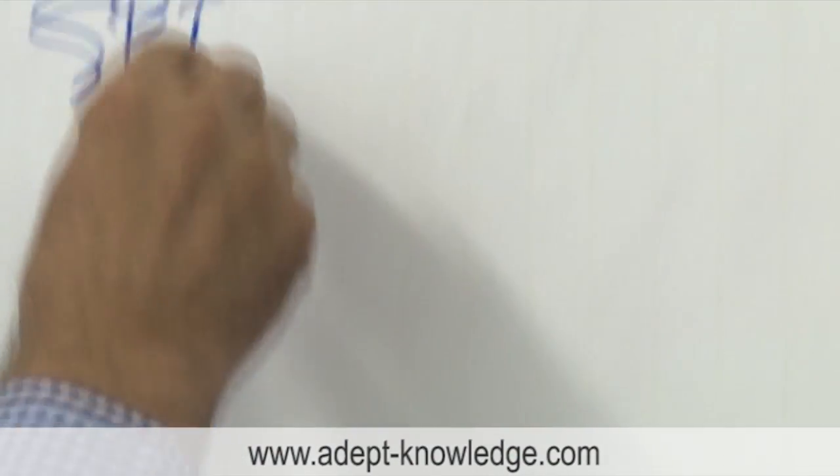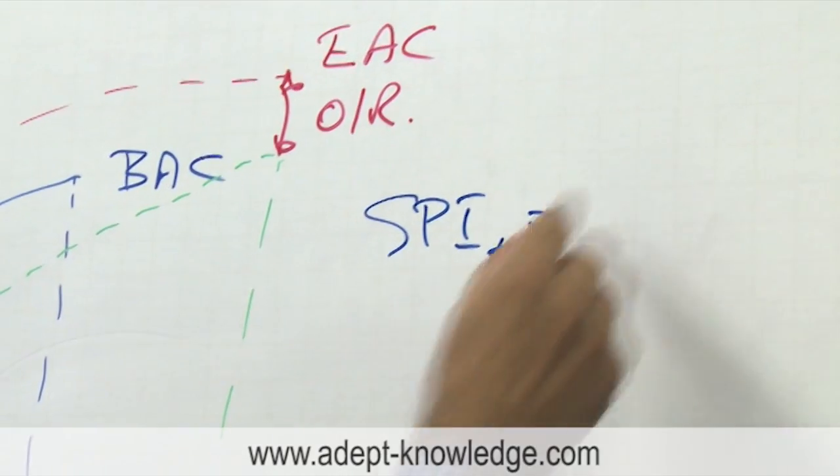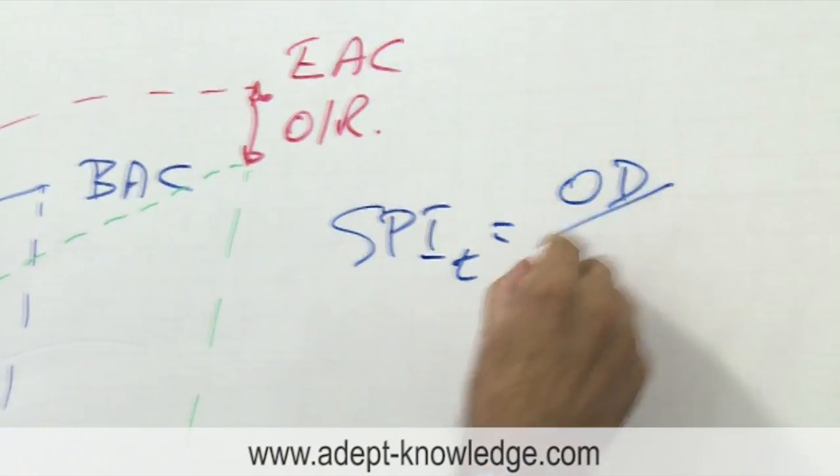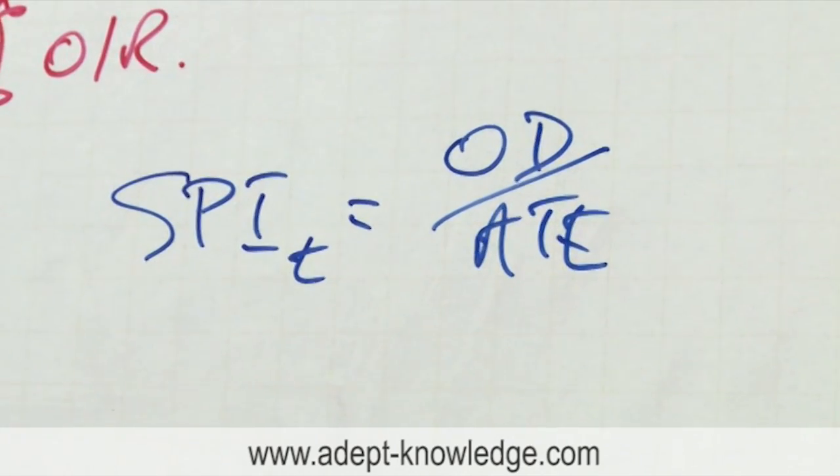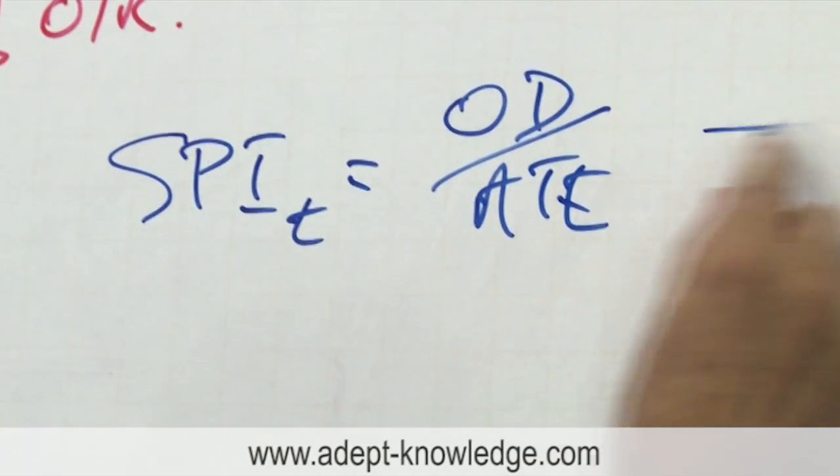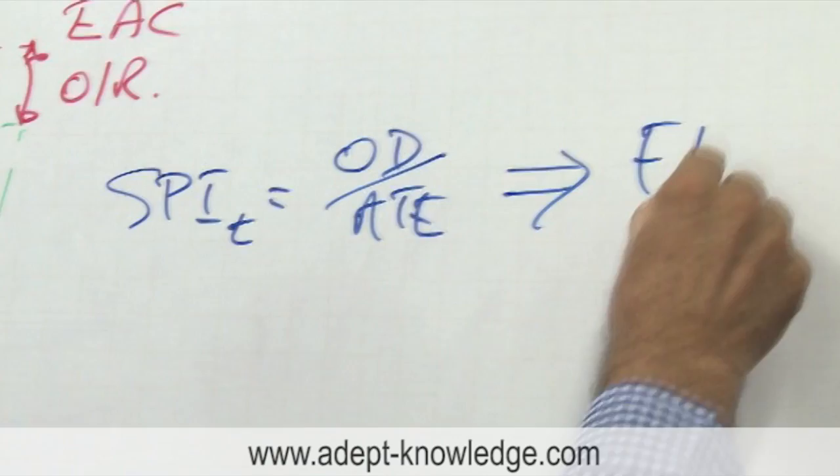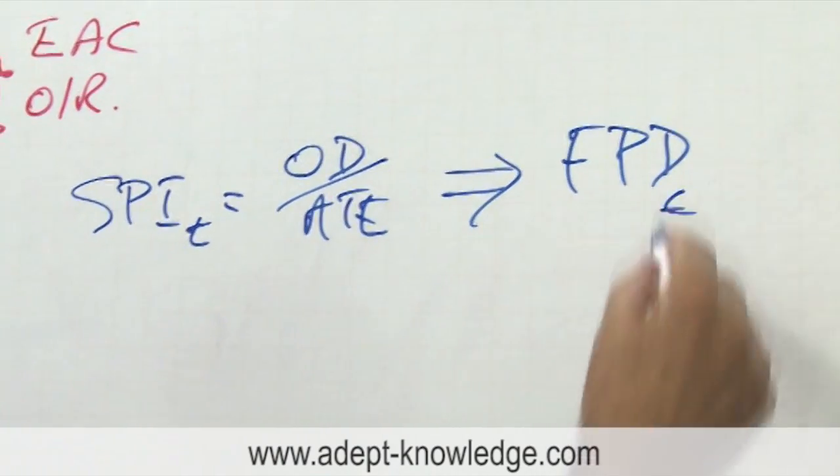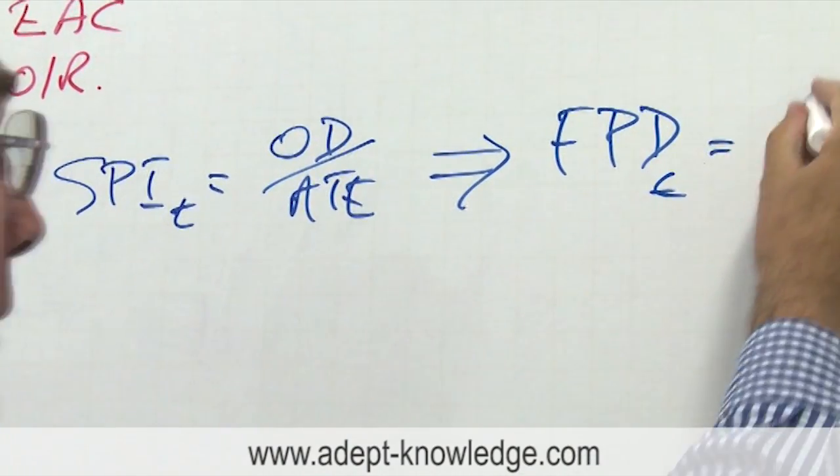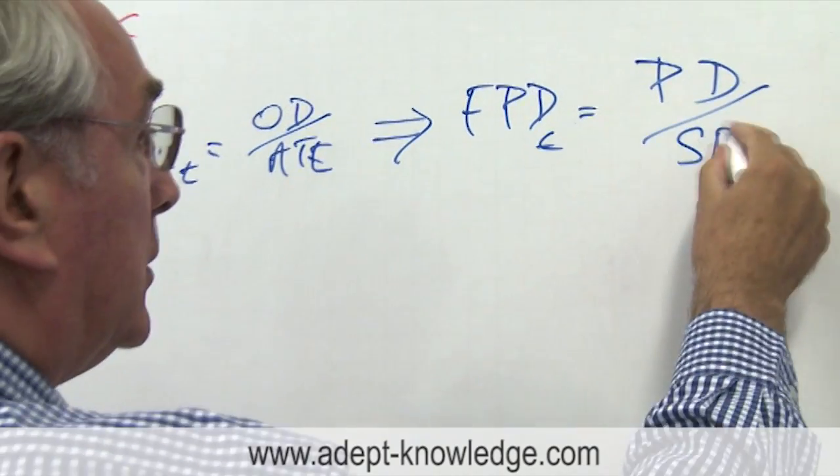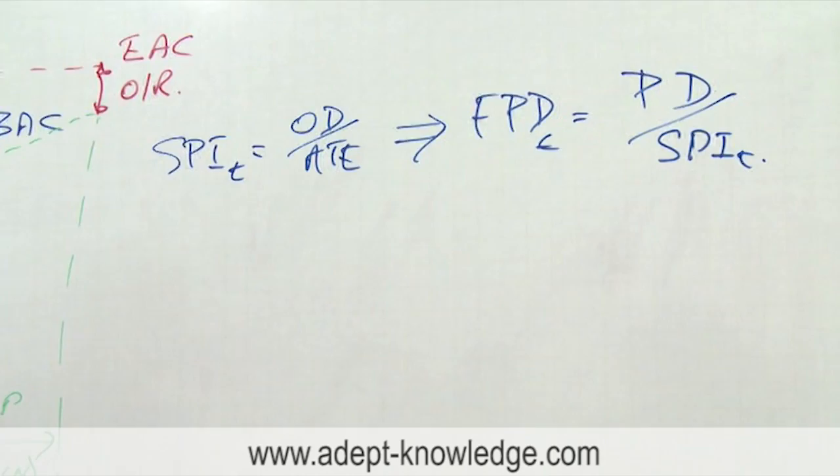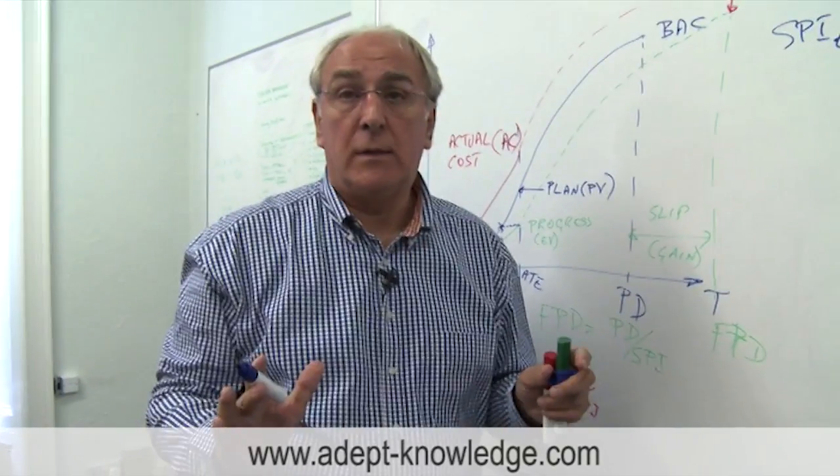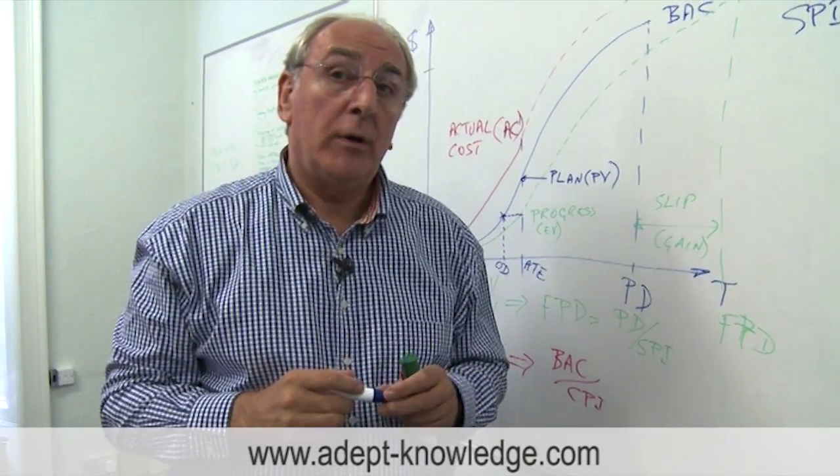The schedule performance index on time, SPIt, is calculated as OD divided by ATE. It's just a better version of that one. We can use it in a similar way and it implies that we can do a forecast project duration, this time with a subscript T, and it's similarly project duration divided by the schedule performance index time. That's absolutely red hot stuff and just perfect for forecasting where we're going on the project.